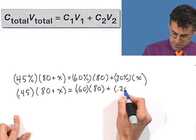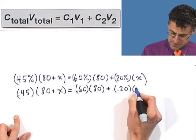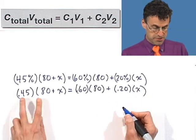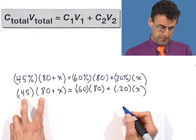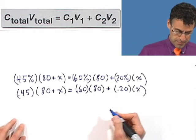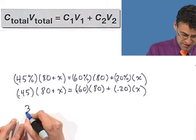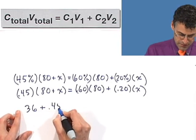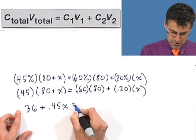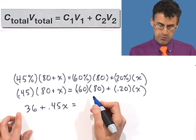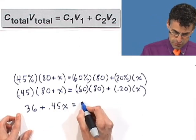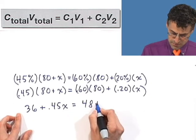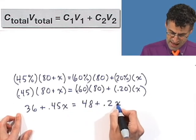And now if we now distribute, so take .45 and multiply it by 80, we see 36 plus .45x equals, and then .6 times 80, what's 60% of 80? That's 48 plus .2x.